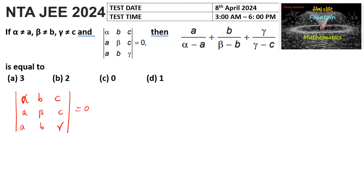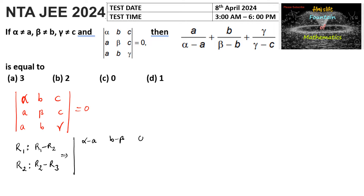We know that by using row operations — for example, replacing R1 with R1 minus R2, and R2 with R2 minus R3 — we will not change the determinant value. Applying these, the first row becomes (alpha - a, b - beta, c - c), i.e., (alpha - a, b - beta, 0). The second row becomes (a - a, beta - b, c - gamma), i.e., (0, beta - b, c - gamma). The last row remains (a, b, gamma).